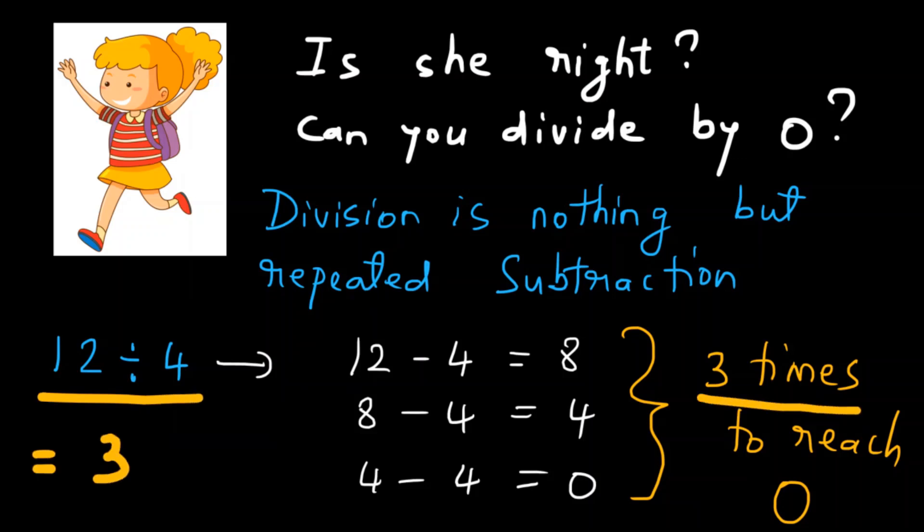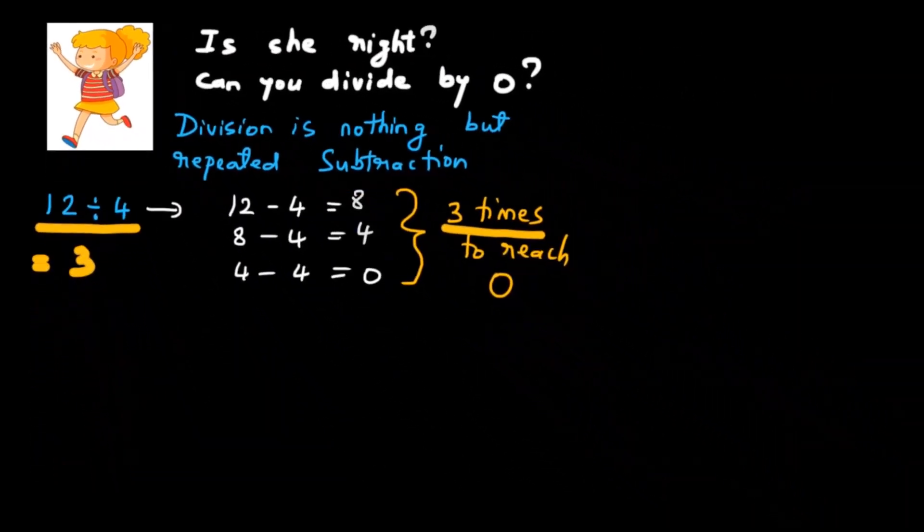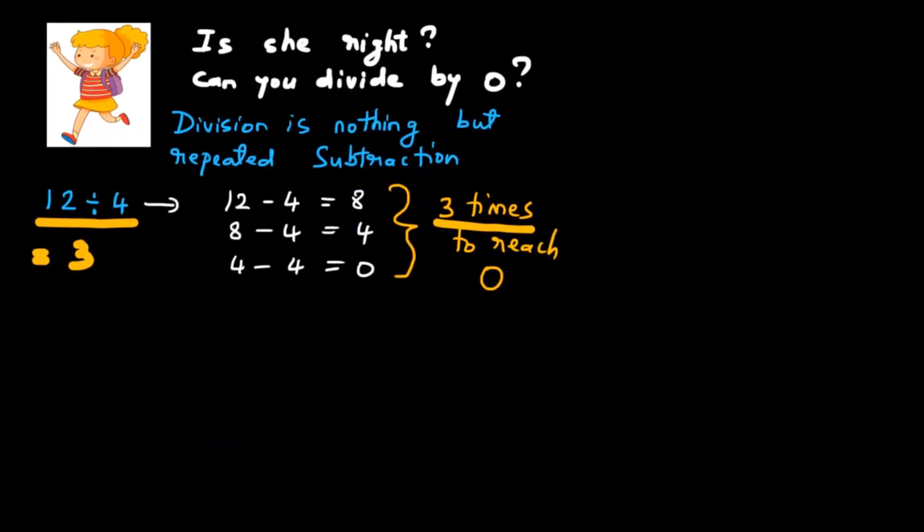Alright, let's keep that aside. Let's try division with 0. Say, we want to do 12 divided by 0. Alright, following the same path, I do 12 minus 0 and I get 12.